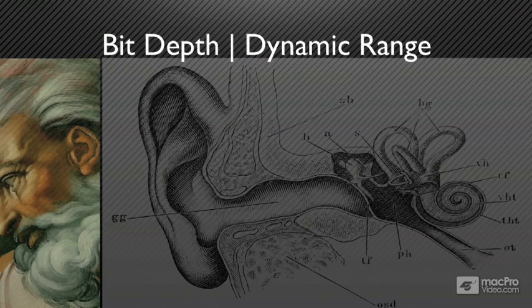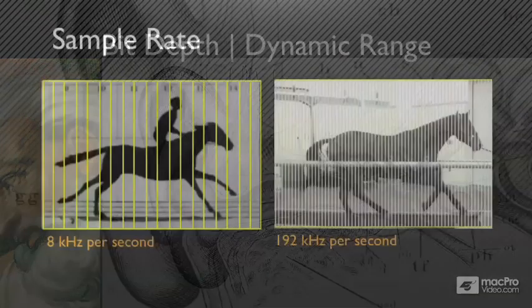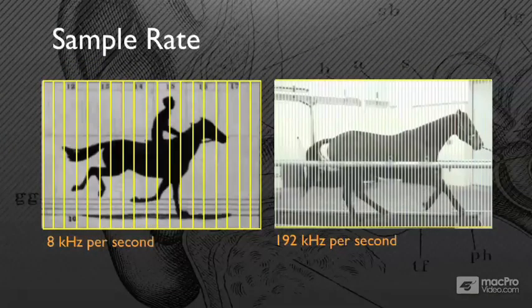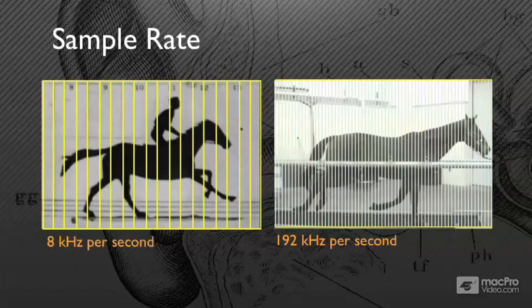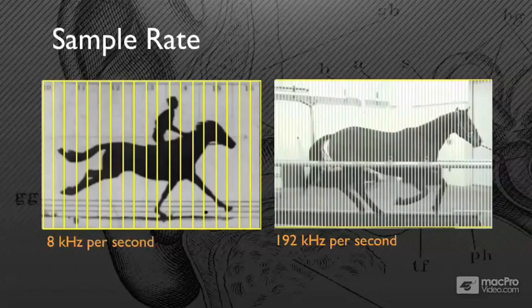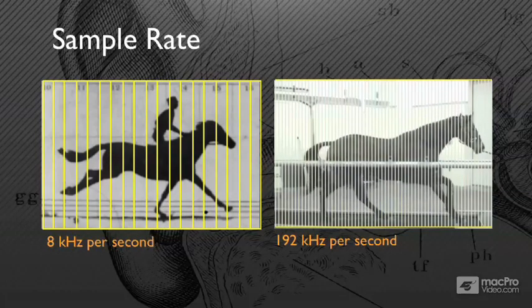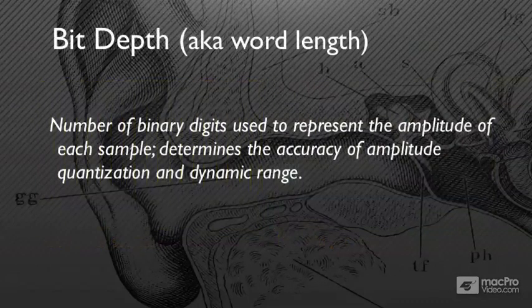Bit depth and dynamic range are our last topic, and I've endeavored to make it as simple as possible. In the previous video, we looked at sample rate in relationship to these horses - the lesser sample rate on the left and the greater sample rate on the right, with the slices being the samples.